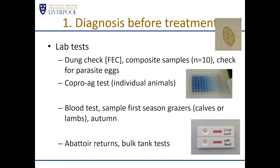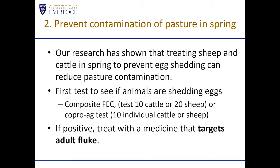Our second recommendation is around grazing management. We've shown using various approaches that if sheep and cattle are treated in the spring to prevent eggs going onto pasture, this reduces the level of infection in the snail and reduces the number of cysts produced on the pasture at the end of summer. We'd suggest that cattle and sheep are tested in the spring to see if they are shedding eggs — using composite faecal egg counts or the copro-antigen test — and if positive, use a treatment which targets adult fluke, since those are the stages present in the animals at that time.